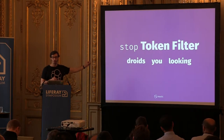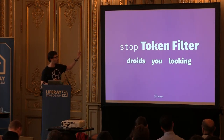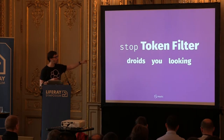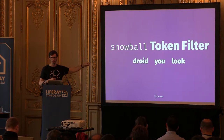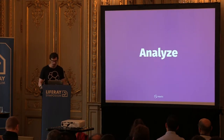The final step is stemming, which cuts off word endings to get down to the root — you don't care if it's 'droid' or 'droids', 'look', 'looks', or 'looking'. So we get down to the root: 'droid', 'you', 'look'. These are the three tokens we actually store for that sentence.